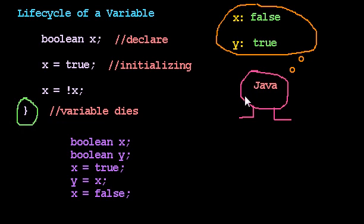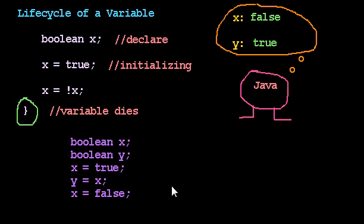I drew this little diagram of Java with feet so that we can show Java remembering the values of variables. I want to go through the lifecycle of a variable in some examples. That will illustrate what we mean when we say declare, then initialize, then use the value, and then the variable dies at the closing brace.